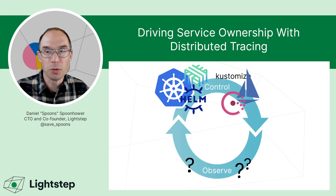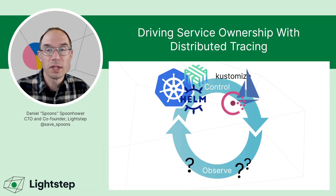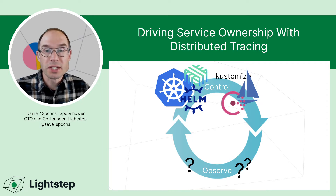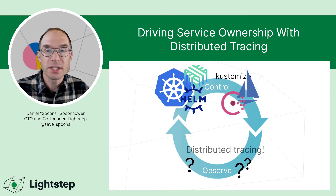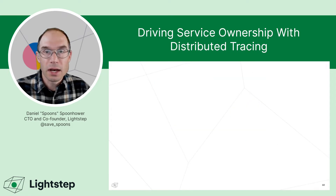Unlike the tools we use to control production systems — where we can focus on the work of individual teams — the way that we observe and the tools we use to do that need to take a holistic perspective on the application. And this is where distributed tracing is really critical. By taking a request-centric point of view, it'll show you how each service is handling part of a user's request.